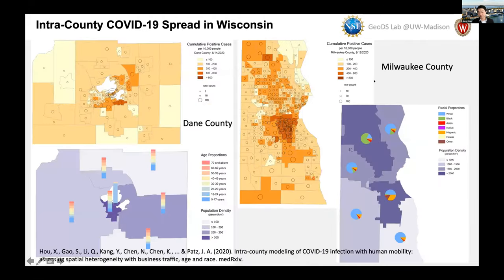Finally, at the inter-county level, we also took spatial heterogeneity into consideration in our modeling effort. Specifically, these are two typical counties in Wisconsin. Dane County has large age structure heterogeneity because of the university. Milwaukee County, one of the most segregated metropolitan areas in the U.S., has large race and ethnicity heterogeneity. Comparing COVID-19 infection rate versus the spatial heterogeneity of race and age structure, we found they correlate with infection cases very well. We use different demographics to explain the spatial heterogeneity of COVID-19 spread.